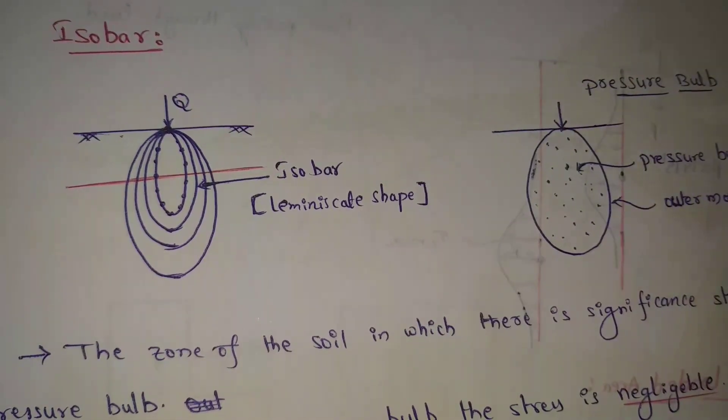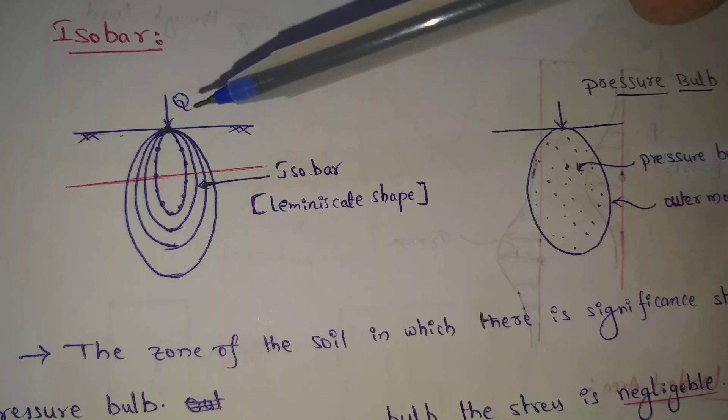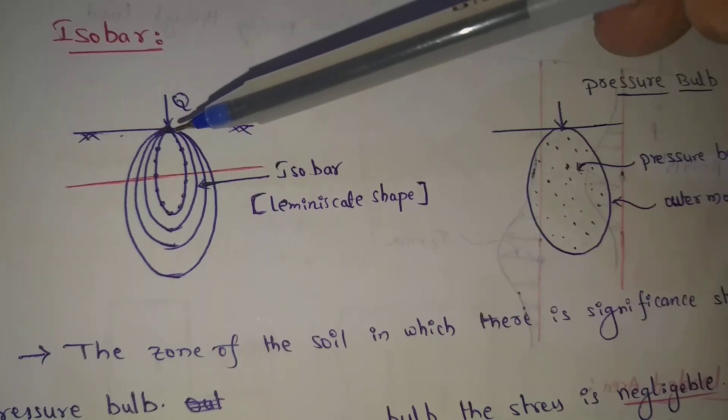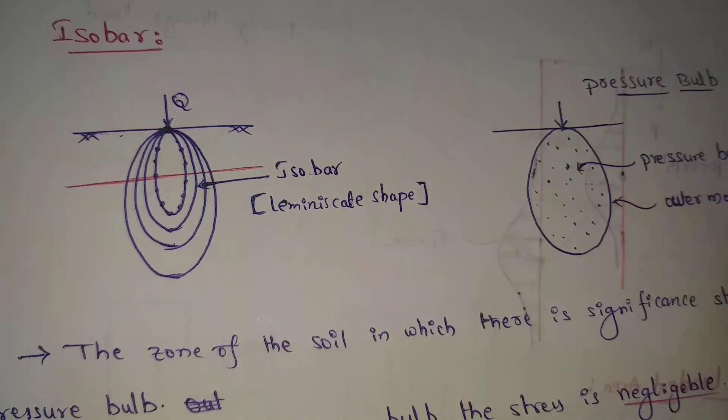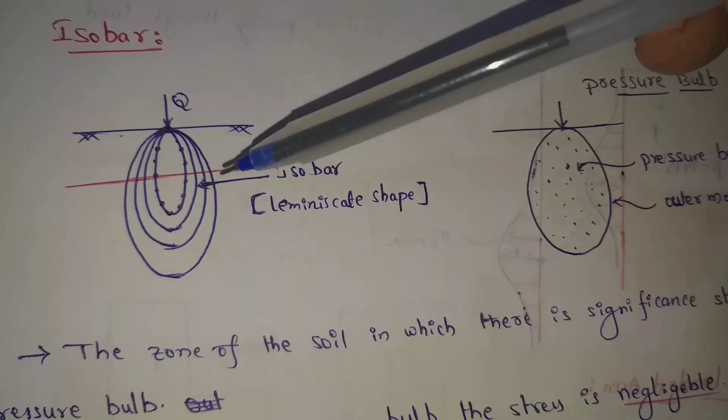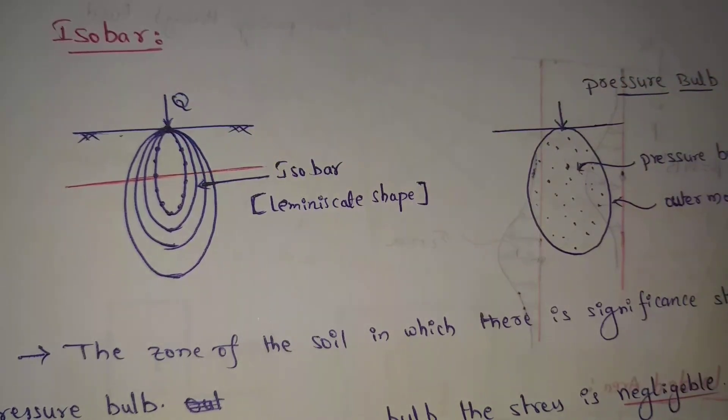Next one is isobars. Isobars means it is a curve or contour connecting all points below the ground surface of equal vertical stresses. For example, the ground level is on the ground level, certain point load acts, so these all are connecting points of equal vertical stresses. Equal vertical stresses connect to one curve we form.